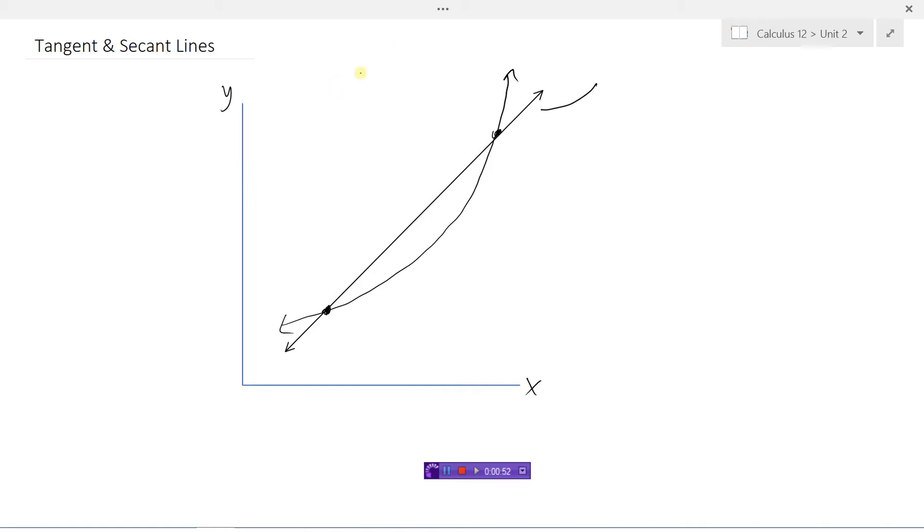When we have a line that crosses a graph in two places we call this a secant line. There's lots of different secant lines that we could draw that would hit this curve in two places.